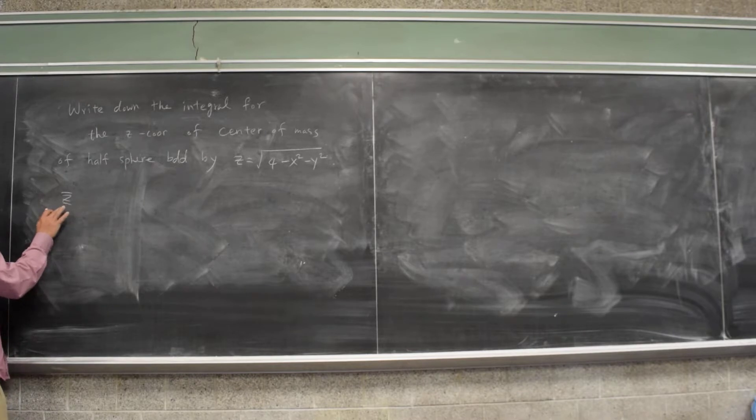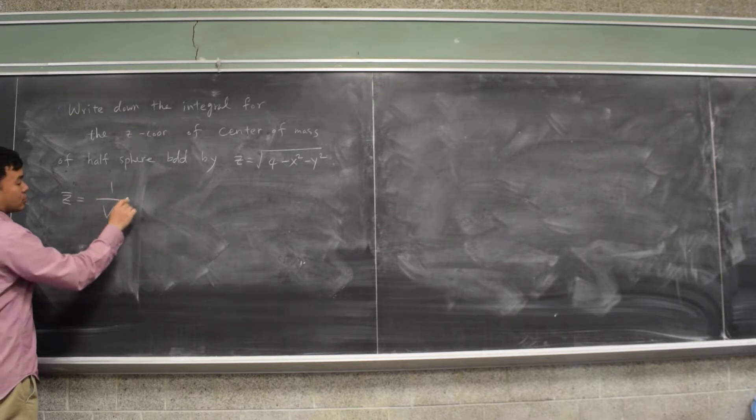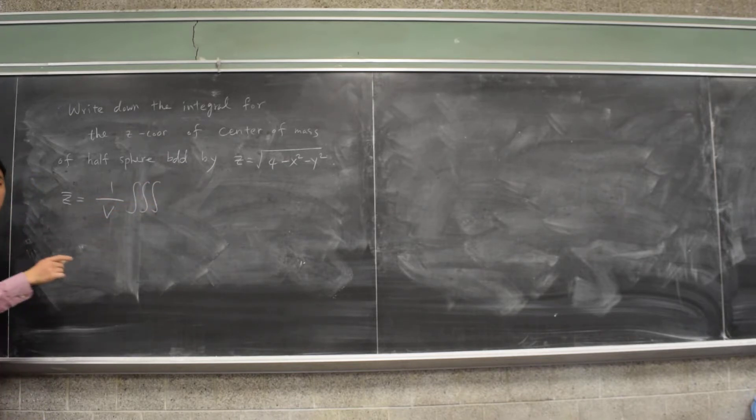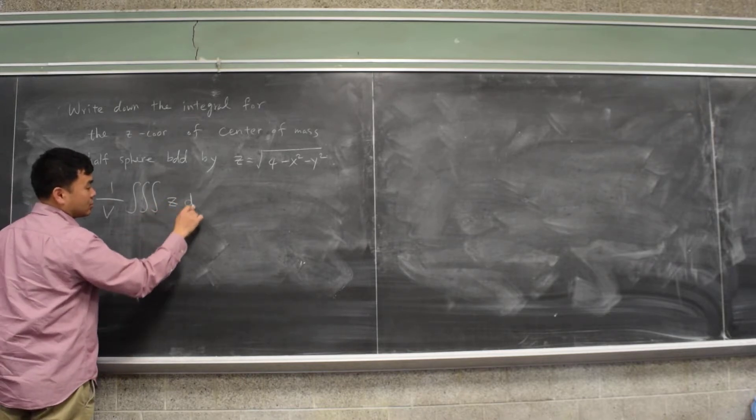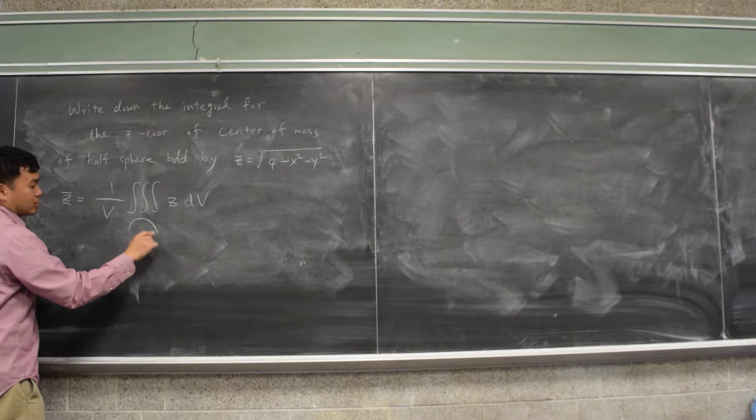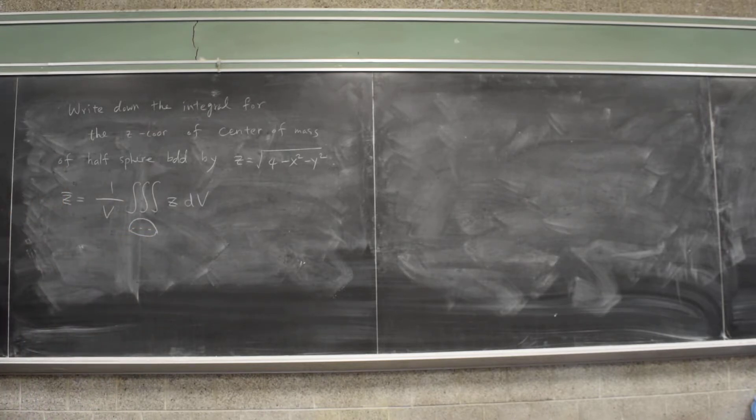Okay, so let's say z bar is, we know that for centroid it's one over the volume times the integral, and we're basically taking the average of the z values, right? z dV over this half sphere. That's what we want. Now let's first try to write down this integral in terms of cylindrical coordinates.